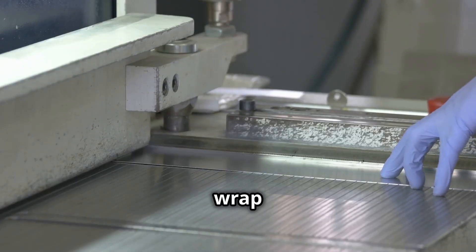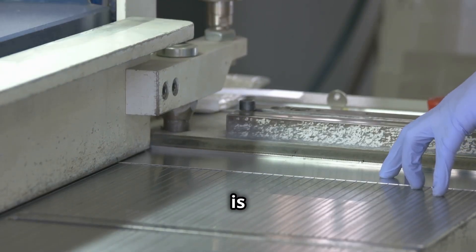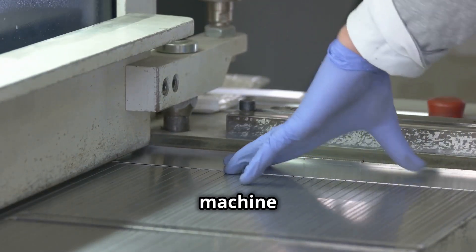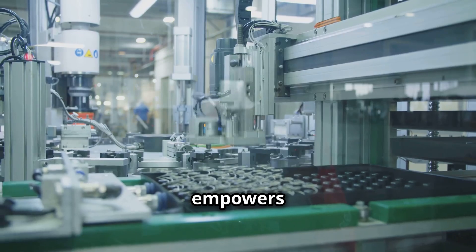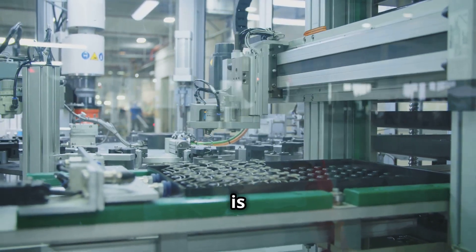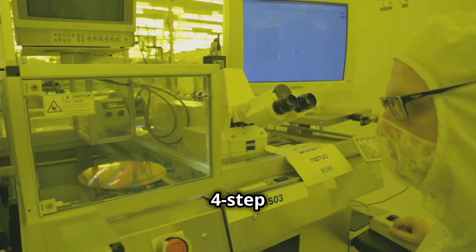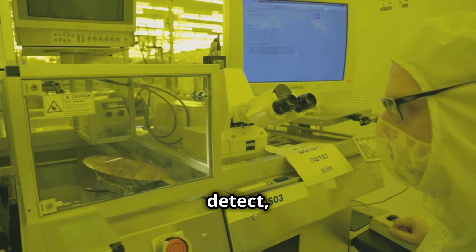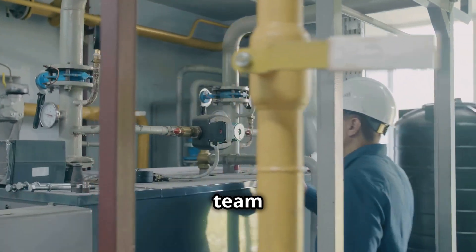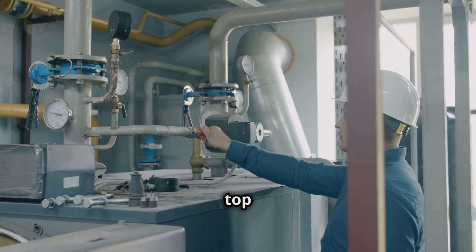To wrap things up, autonomous maintenance is a powerful tool for achieving peak machine performance. It empowers your team and ensures that your equipment is always in top condition. By following the four-step cycle of clean, inspect, detect, correct, and perfect, your team can ensure that your equipment is always in top condition. This proactive approach leads to long-term success.